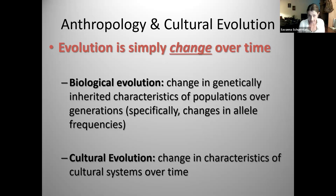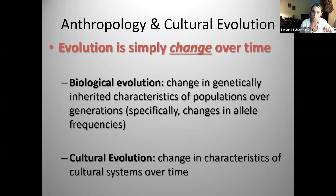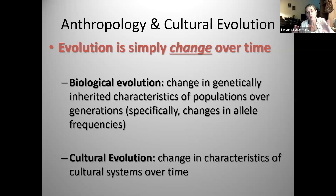Evolution doesn't mean better, more progressed, or more advanced. It just means change over time — could be good, could be bad, could be neutral. Biological evolution is the change in the genetic characteristics of a population over time. Those traits that give a survival or reproductive advantage allow individuals to survive and reproduce in higher numbers, passing those traits onto the future. If different life forms could have arisen through biological change, then perhaps this is also how we got all these different types of societies.